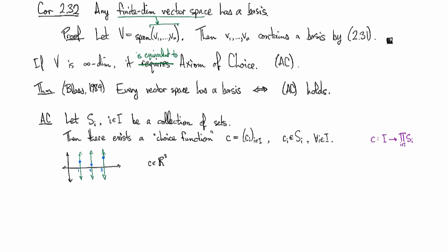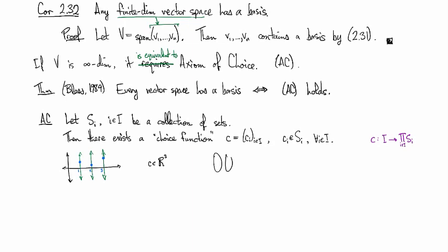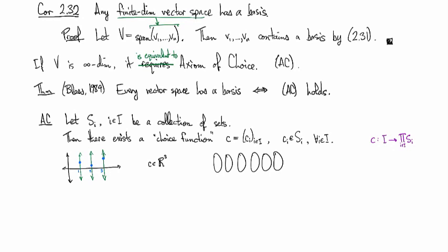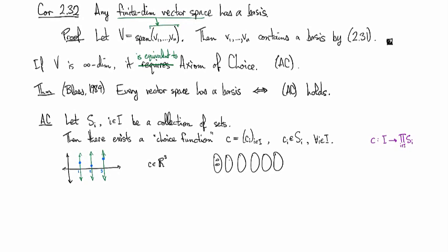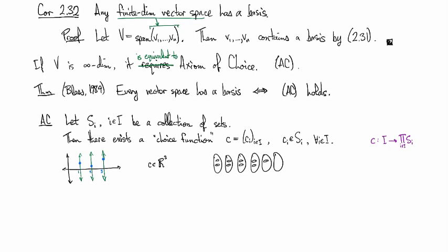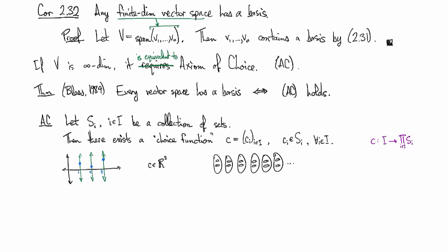People have strong feelings about it because on the one hand it seems perfectly reasonable. You want to say that in certain situations, like if you have an infinite number of sets and each one of them contains like a pair of shoes, then you want to be able to say, okay then I'm going to make my choice by just taking all of the left ones.